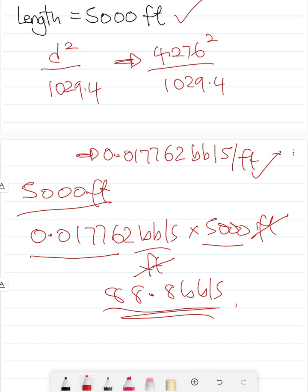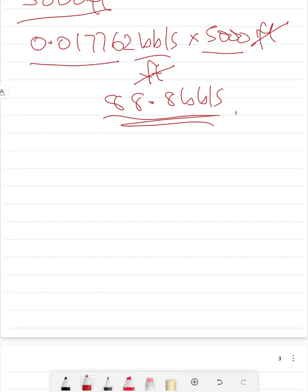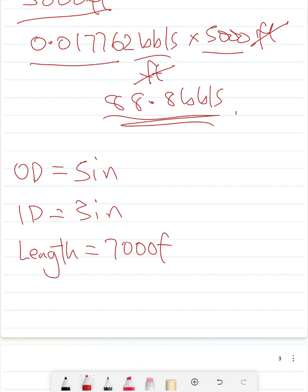So I'd like us to do a quick example on our own. Say the pipe OD, we have another pipe of OD 5 inches and ID 3 inches and say we have a length of 7000 feet.